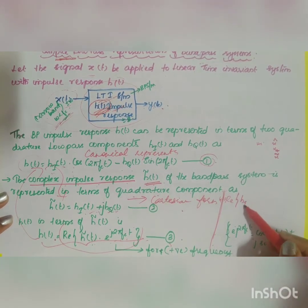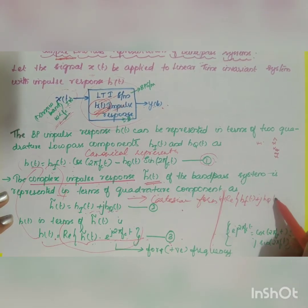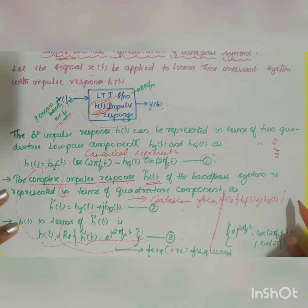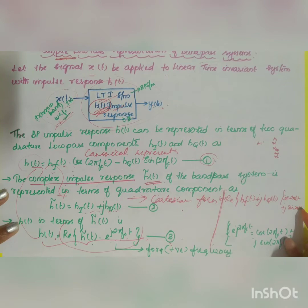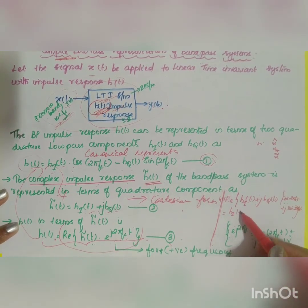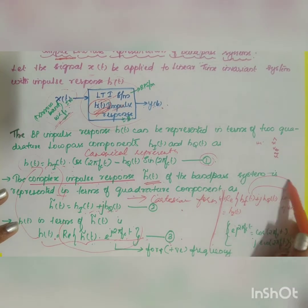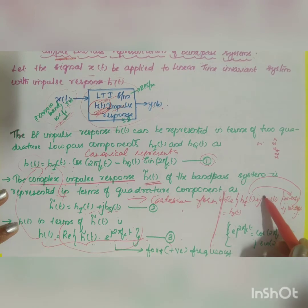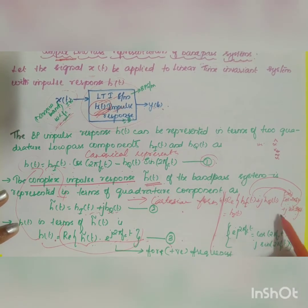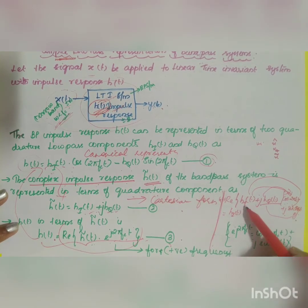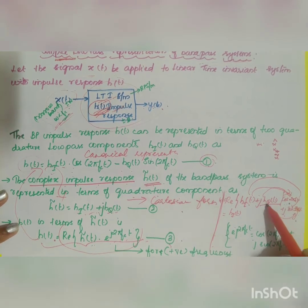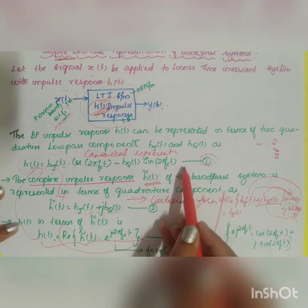To verify, taking the real part: h̃(t) = [h_i(t) + j·h_q(t)], and substituting e^(j2πfct) = cos(2πfct) + j·sin(2πfct), then cross-multiplying gives h_i(t)·cos(2πfct) + j·h_i(t)·sin(2πfct) + j·h_q(t)·cos(2πfct) + j²·h_q(t)·sin(2πfct). Since j² = −1, the imaginary parts cancel, and the real part yields h_i(t)·cos(2πfct) − h_q(t)·sin(2πfct), which is Equation 1.